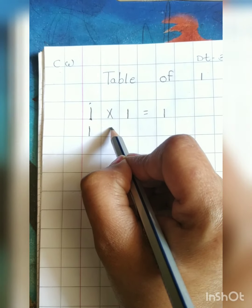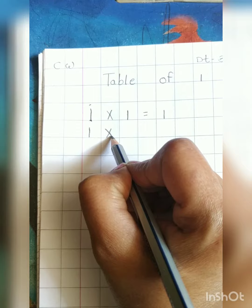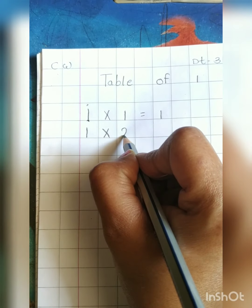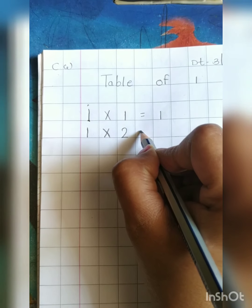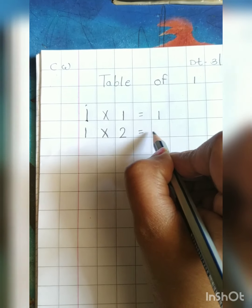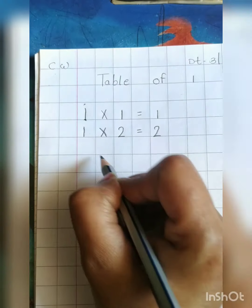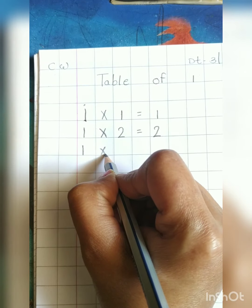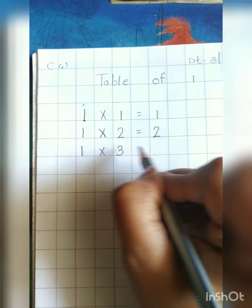1, cross mark, 1 after 2. 1 times 2 is 2. 1 times 3 is 3.